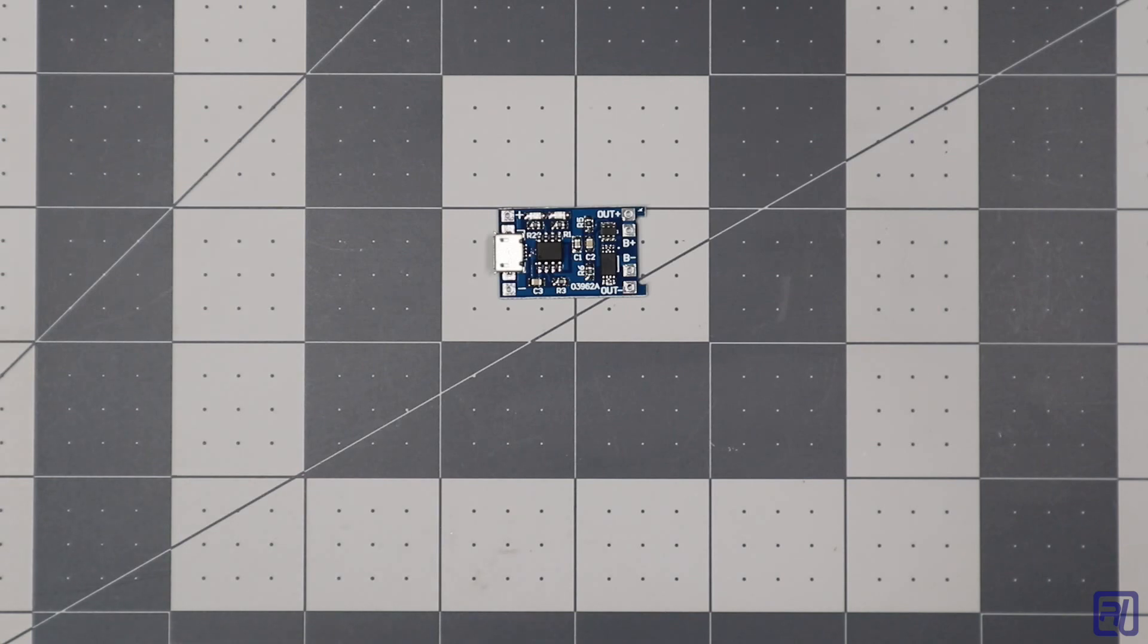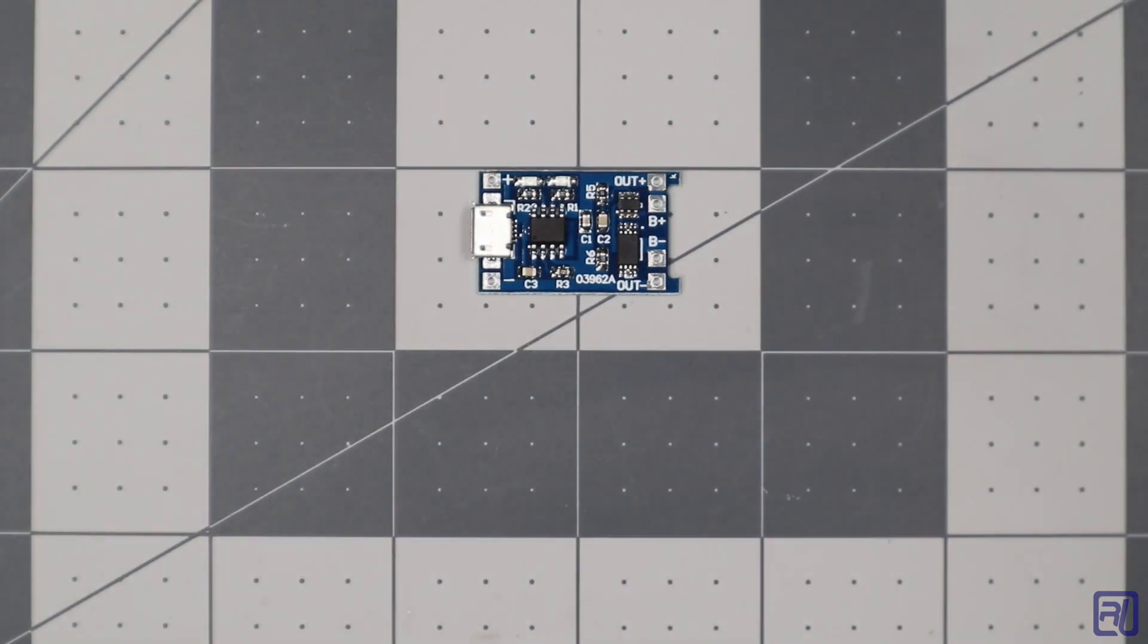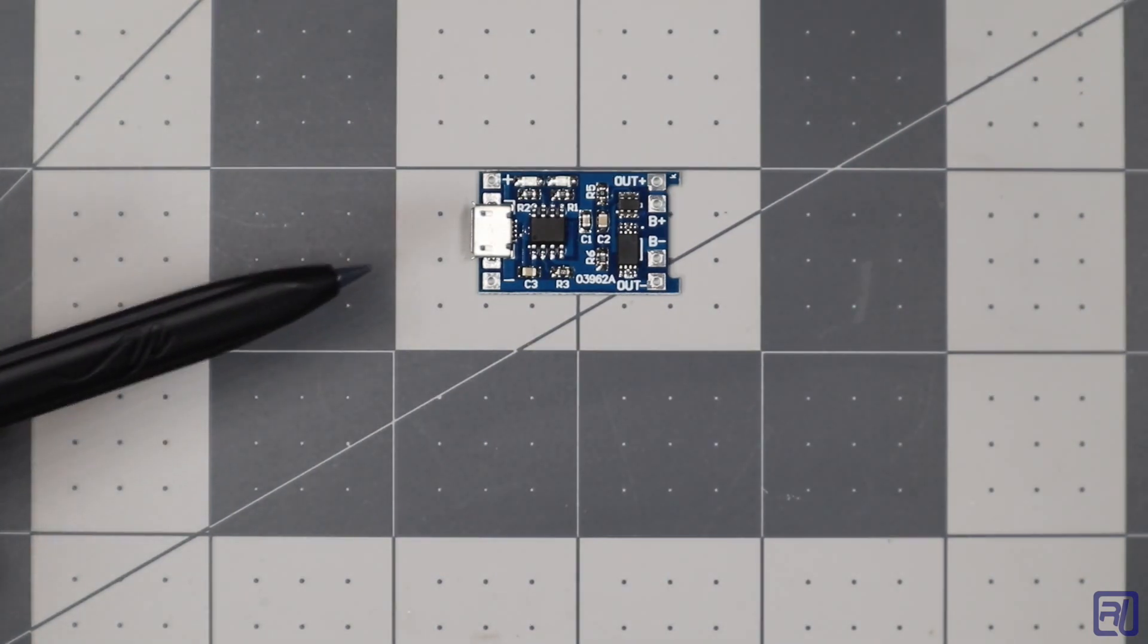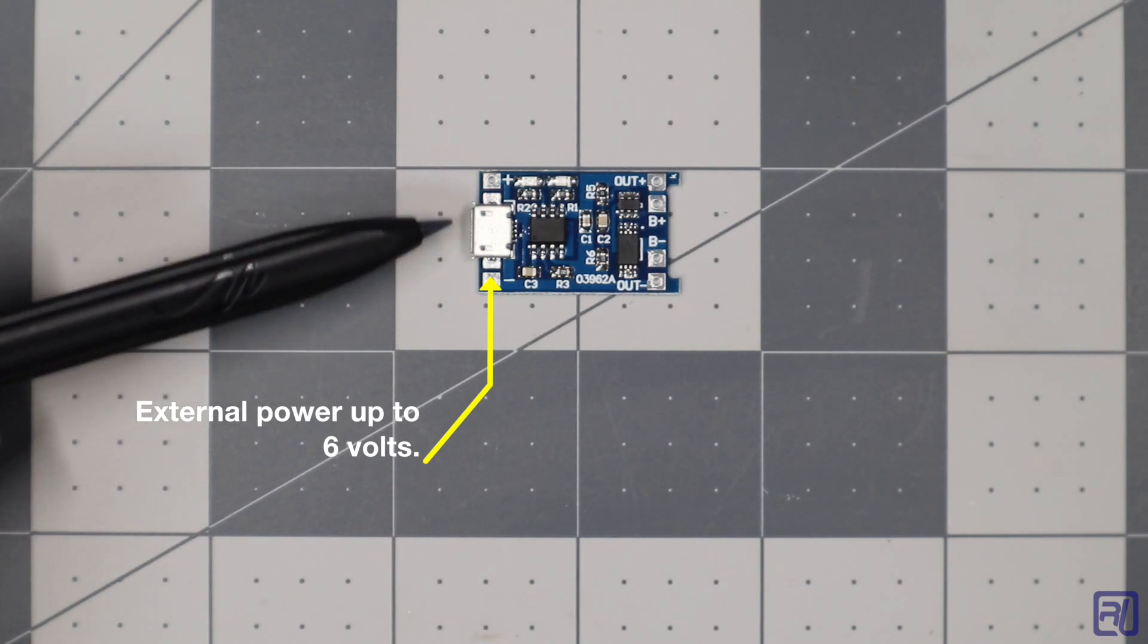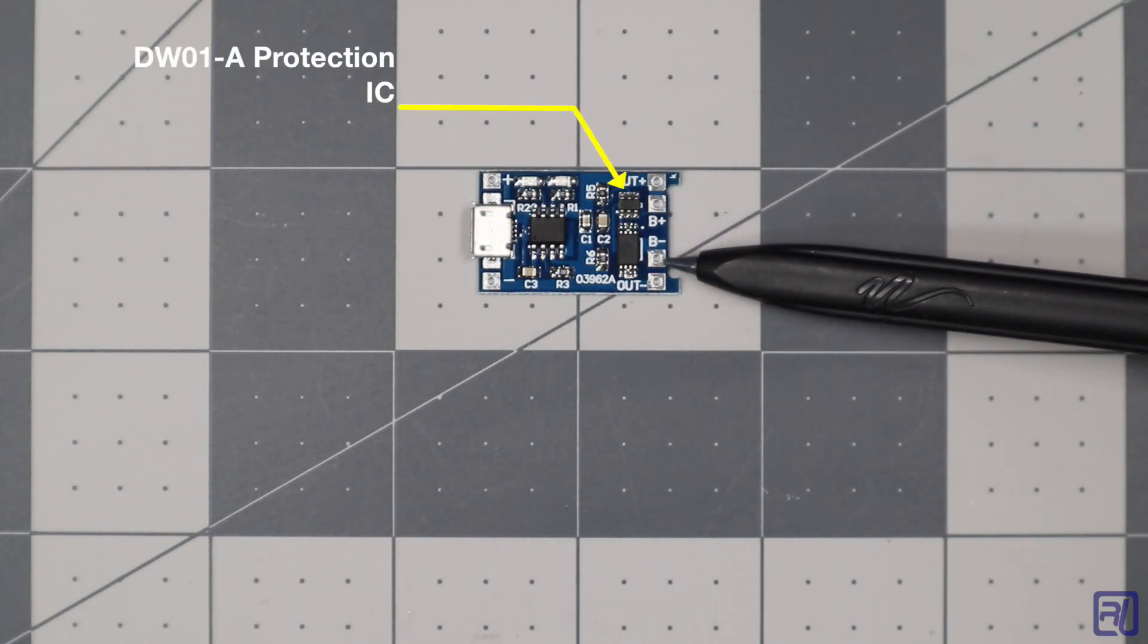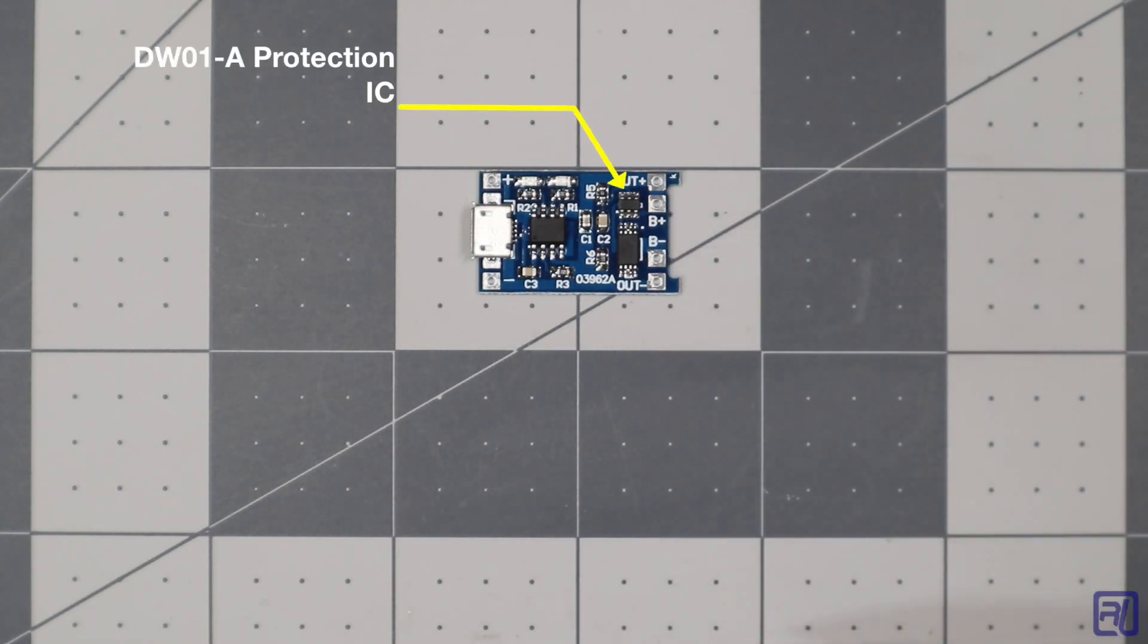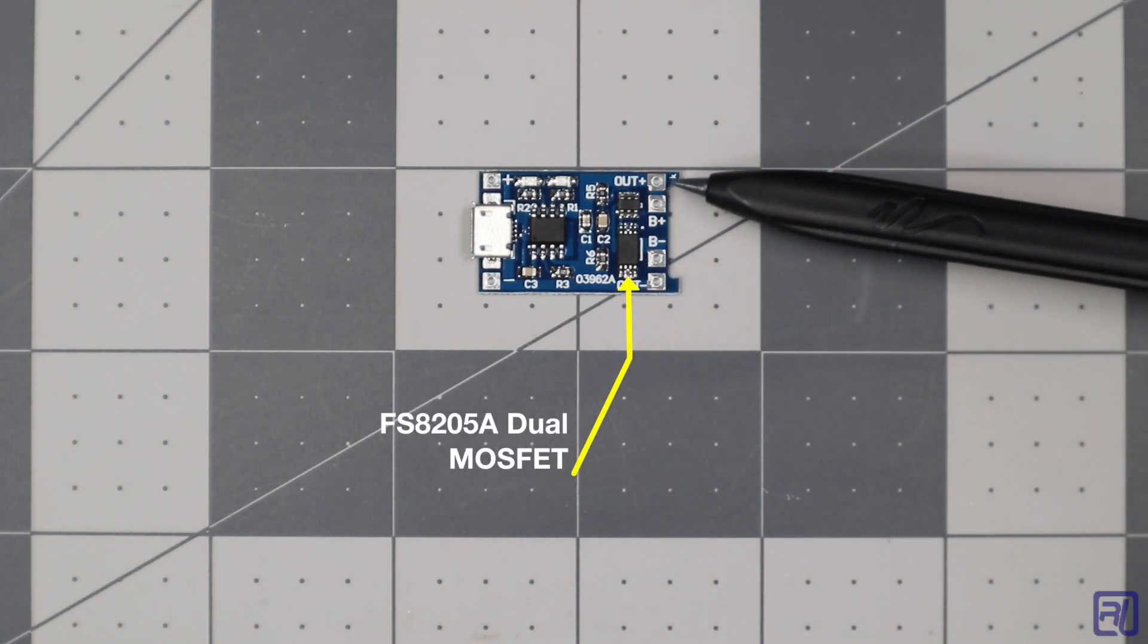Now I'm going to zoom in to talk about some of the features of the board. It's very easy to power this board. Attach a micro USB cable here or connect an external power source to these two pads here. You can connect the battery by soldering two wires to the B plus B negative pads over here. And the output can be soldered on these pads on the edges here.